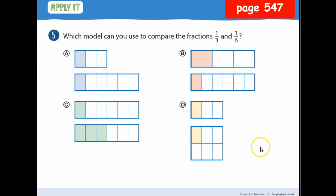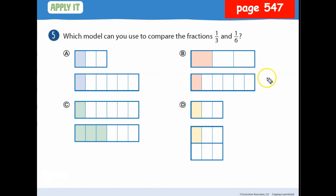Which model can you use to compare 1/3 and 1/6? Option A doesn't work because the number lines are not the same length. Option C doesn't work because one bar shows 3/6, which is a half, not 1/3. Option D doesn't work because the shapes aren't the same length. Option B works: it correctly shows 1/6 and 1/3, and they are the same length.